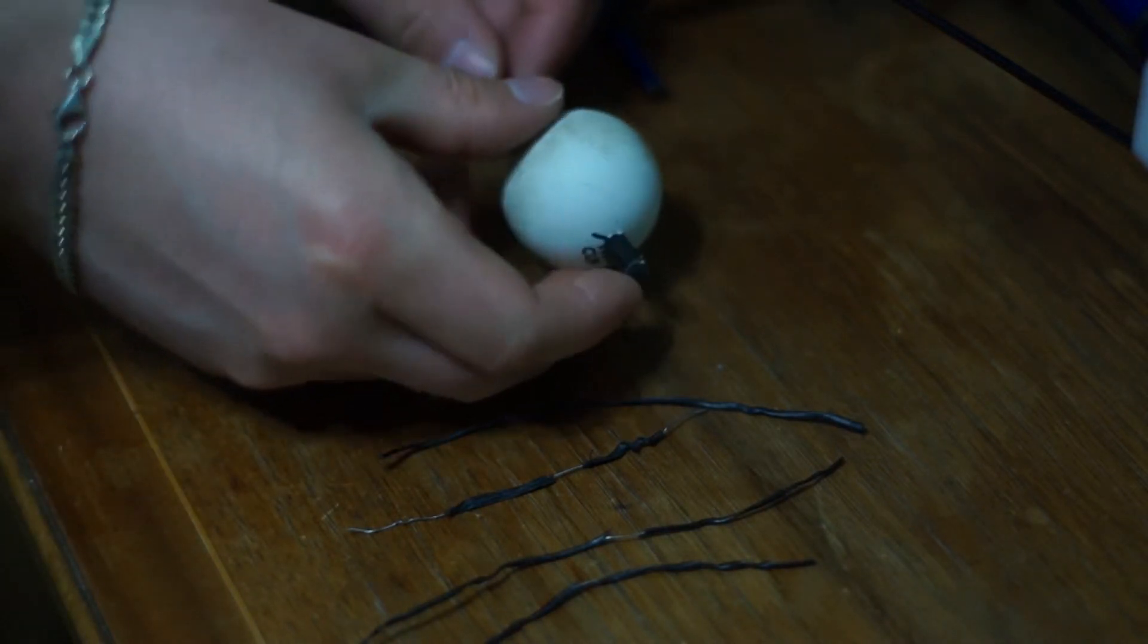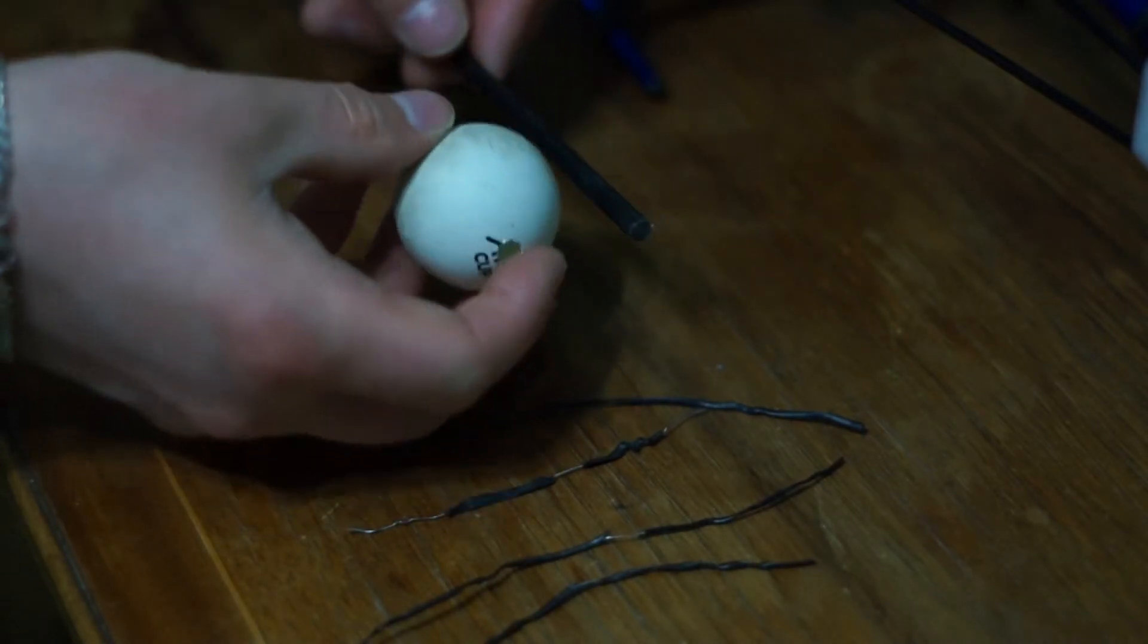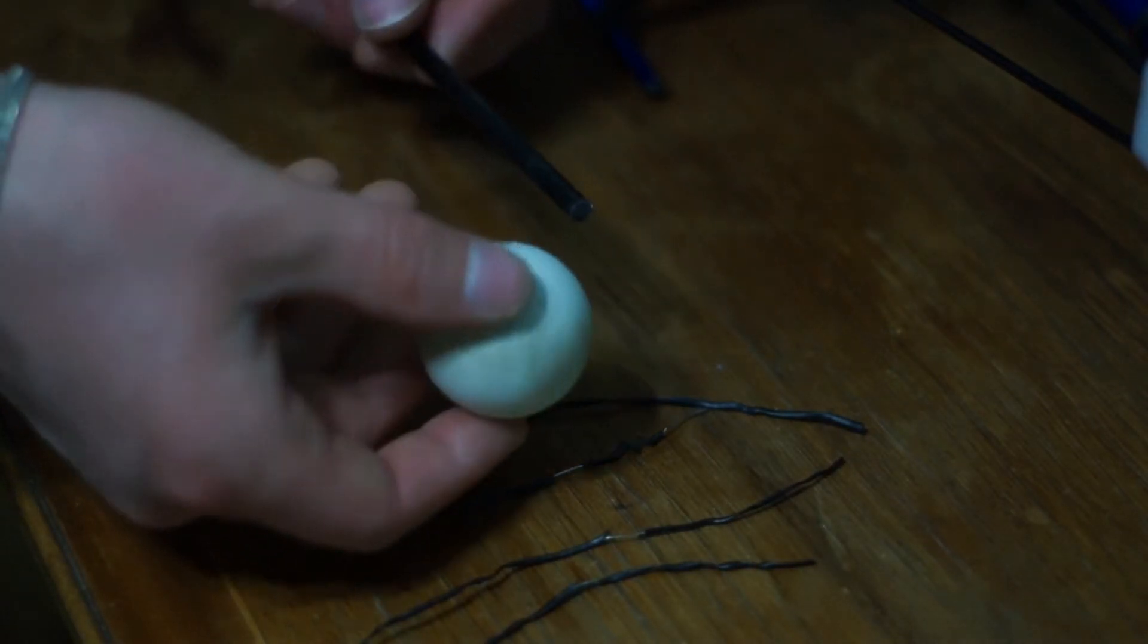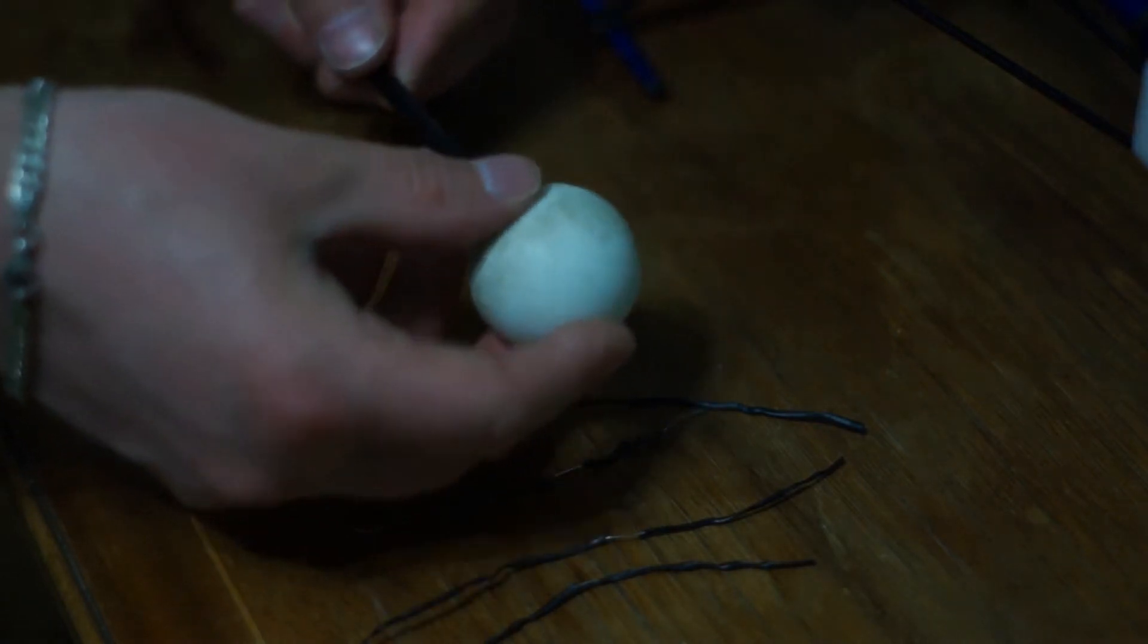When you put the ping-pong balls on the bars, they can slide back and forth, which is not good when you are flying. So first you should put them on.